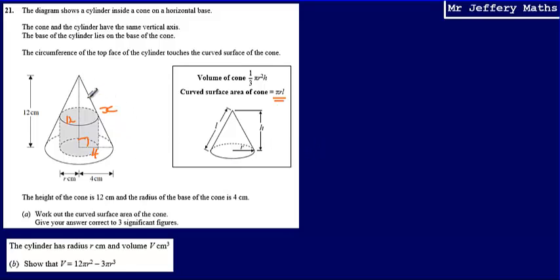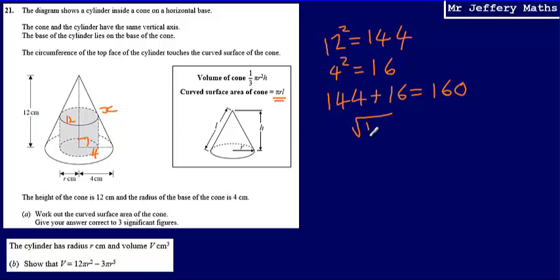So let's work out this length. So to do this, I'm just going to use Pythagoras. So 12 squared gives me 144. Then 4 squared gives me 16. I'm going to add these together because I'm looking to try and find the hypotenuse. So 144 plus 16 to give me 160. And then last thing that I'm going to do is square root to give me that length.